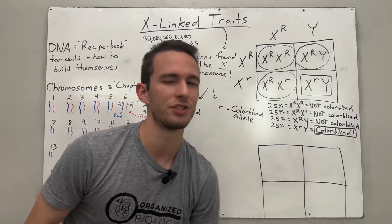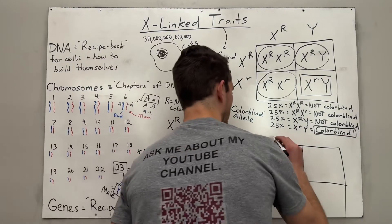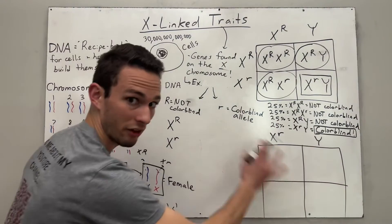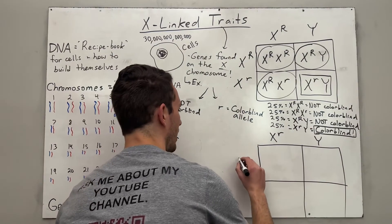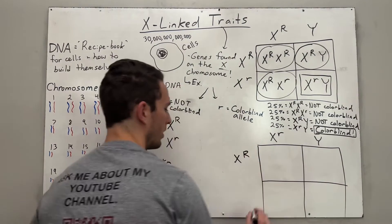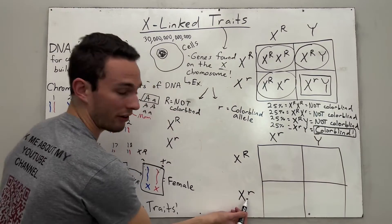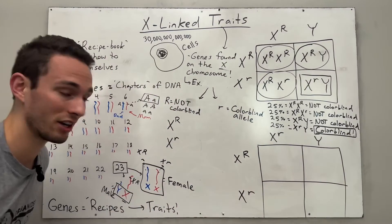This brings us to a key point: X-linked traits are more common in males because males only have one opportunity for the X chromosome. If you get the recessive allele for colorblindness, you will express that trait. Now let's do one more cross. Let's say we have a colorblind dad — X little r, Y — and a carrier female who is not colorblind but carries the recessive allele.